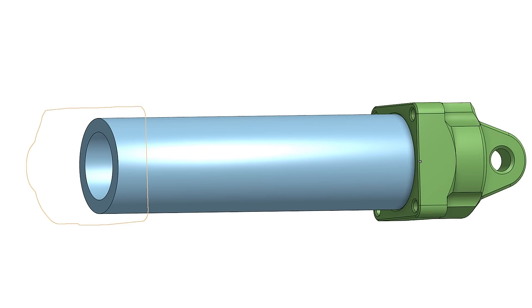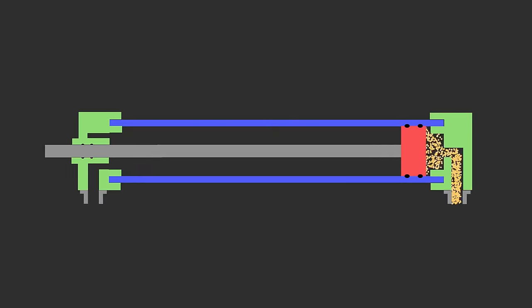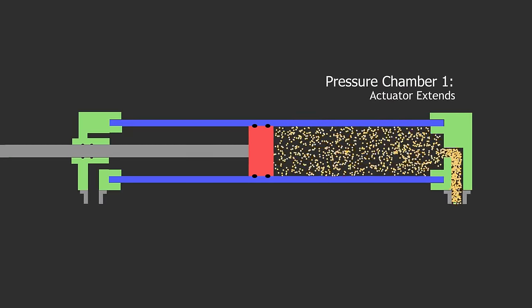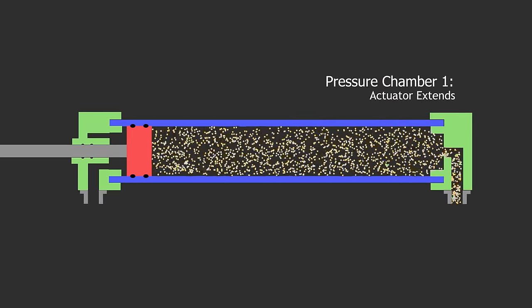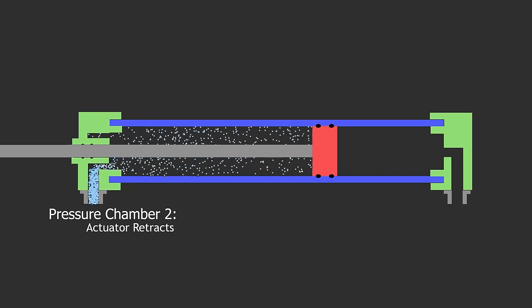But to turn this pipe into an actuator, we need to cap both ends. The end caps combined with the piston inside create two different pressure chambers. By controlling the pressure in these chambers, we can make the piston extend or retract.